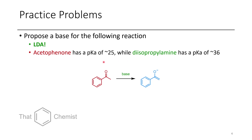In this final problem, I want you to propose a base for the following reaction, and the base that I would use is LDA, which is the most common base used for deprotonating ketones. The reason this reaction will work is acetophenone has a pKa of 25, while the protonated form of LDA, diisopropylamine, has a pKa of 36 — that's 11 orders of magnitude. This is going to work quite well.